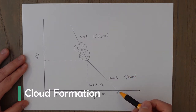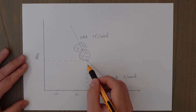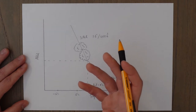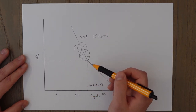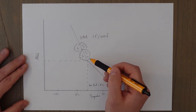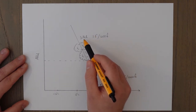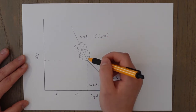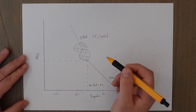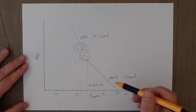A parcel of air rises and cools at the dry adiabatic lapse rate of 3 degrees per thousand feet until it reaches the dew point temperature, where the air can no longer hold any more water vapor and becomes saturated. The water vapor then condenses to form the beginnings of clouds, and as the parcel of air continues to rise at the saturated adiabatic lapse rate of 1.8 degrees per thousand feet, it forms more clouds as it goes.